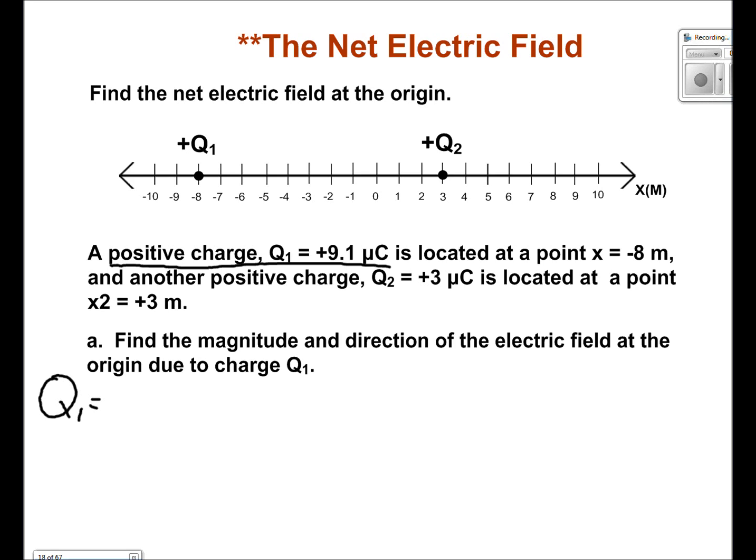Q1 has a magnitude of 9.1 micro coulombs. This can be written as 9.1 times 10 to the negative 6 coulombs. Q1 is a distance 8 meters away from the origin.